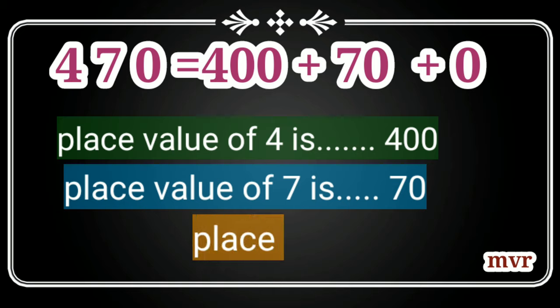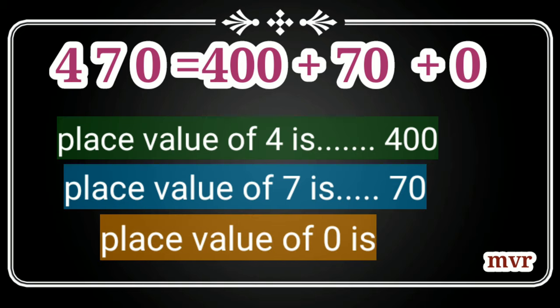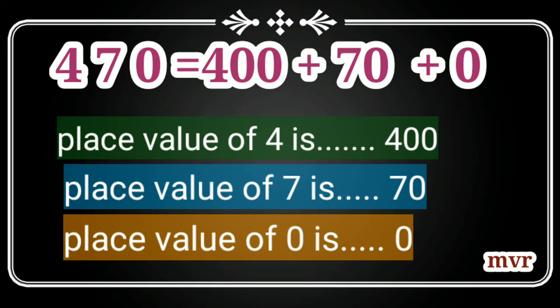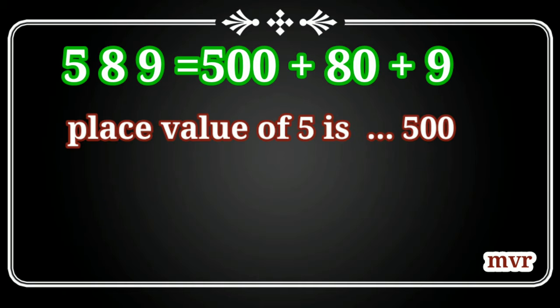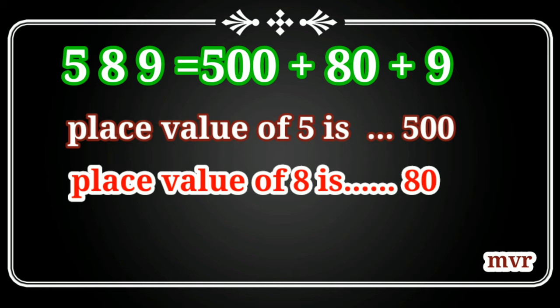470 can be written as 400 plus 70 plus 0. So the place value of four is four hundred, place value of seven is seventy, and place value of zero is zero.